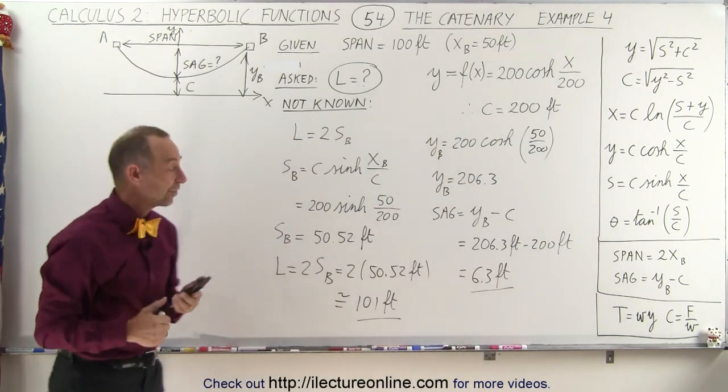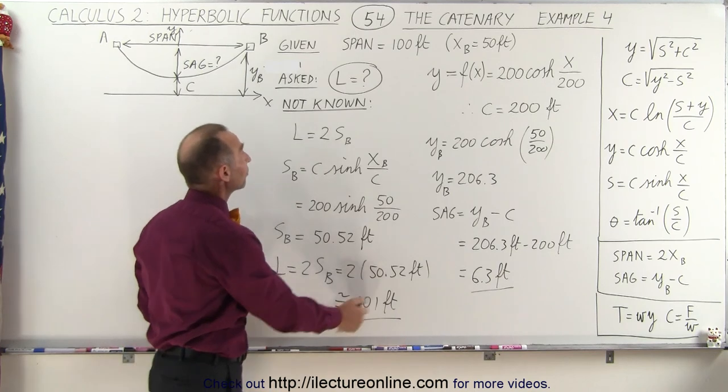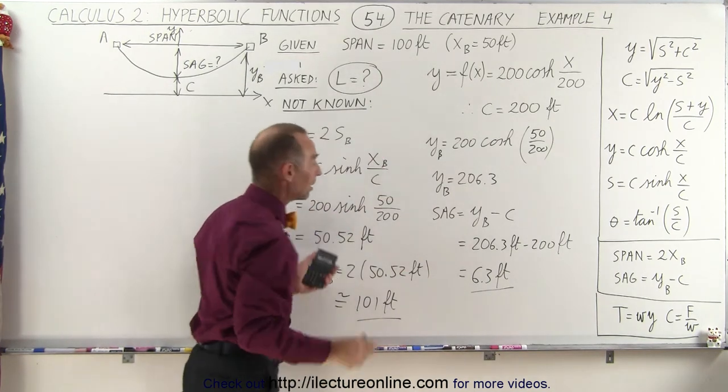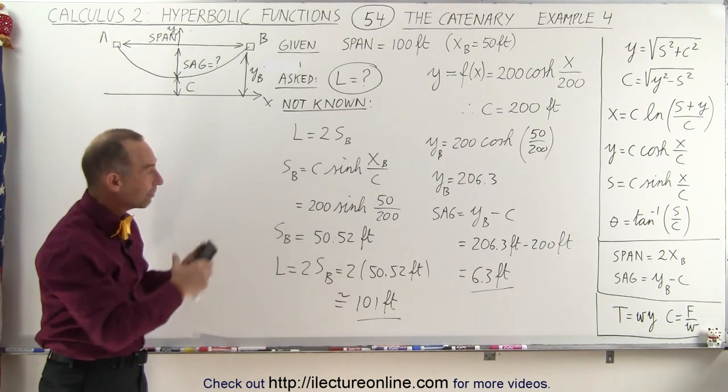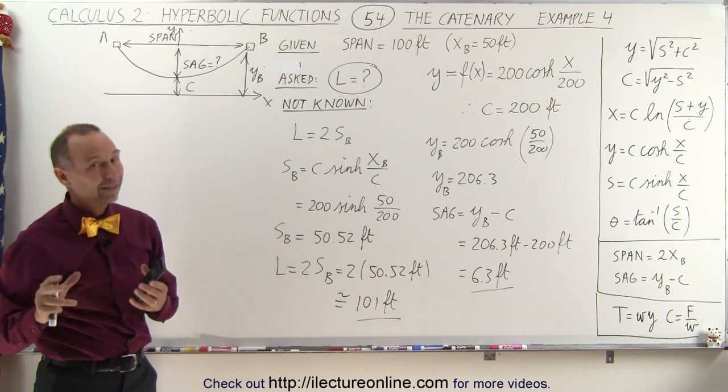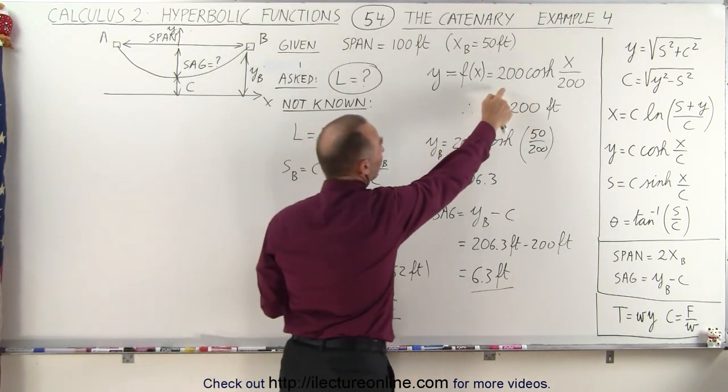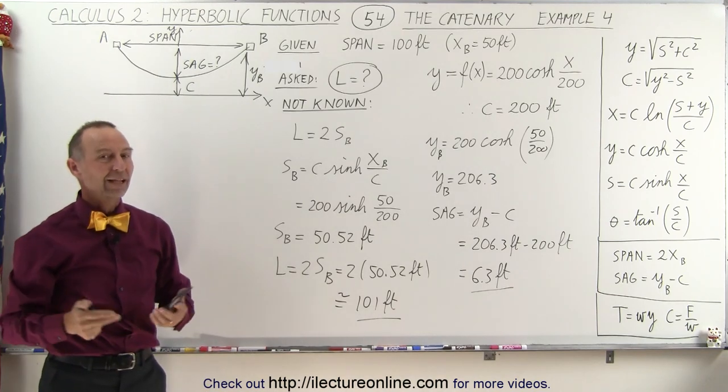Again, that's not much of a sag, which means that the length of the cable is just slightly greater, one foot greater than the actual span between two supports. So that's how we're able to find everything we need to know about the cable, about the catenary. Not so difficult once they give us the actual equation that describes the shape of that catenary. And that's how it's done.